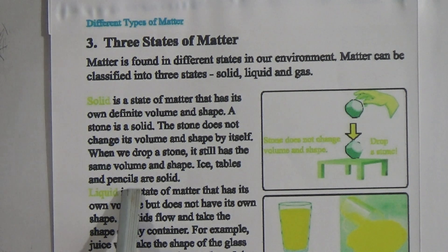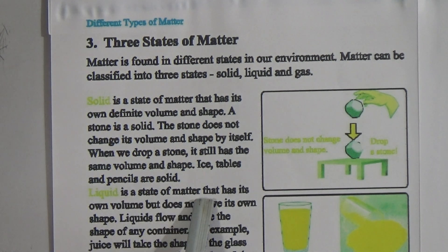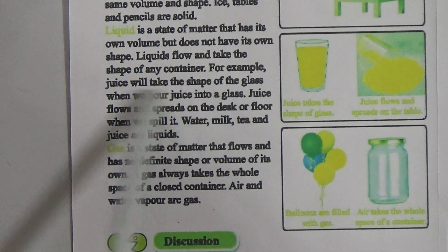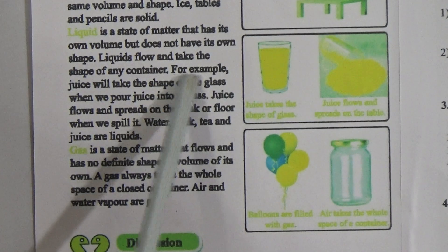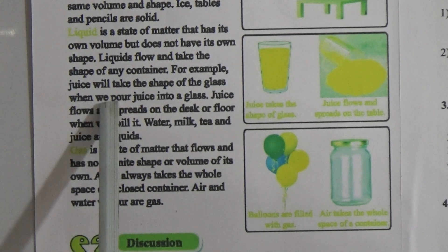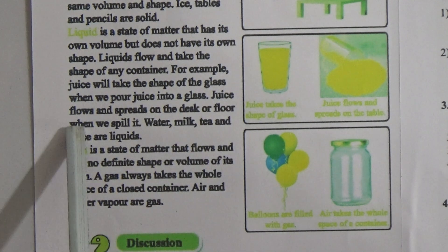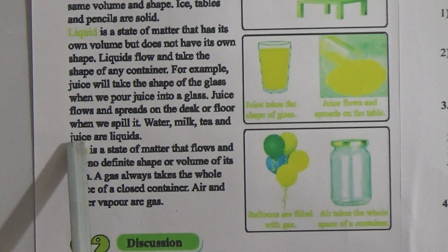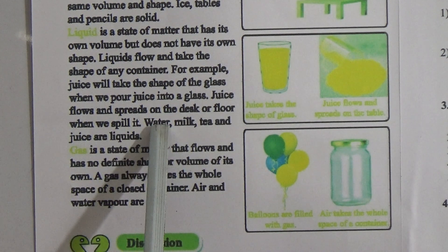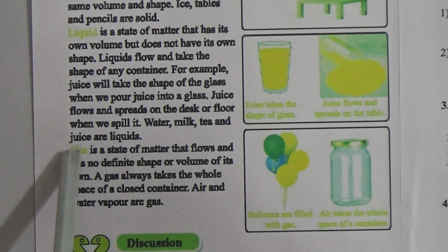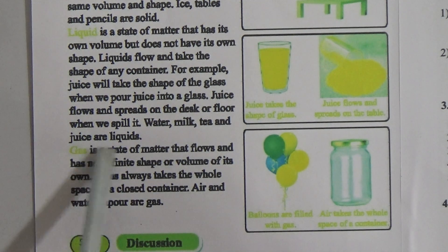Liquid is a state of matter that has its own volume but does not have its own shape. Liquid flows and takes the shape of any container. For example, juice will take the shape of the glass when we pour it in. Juice flows and spreads on the desk or floor when we spill it. Water, milk, tea, and juice are liquids.